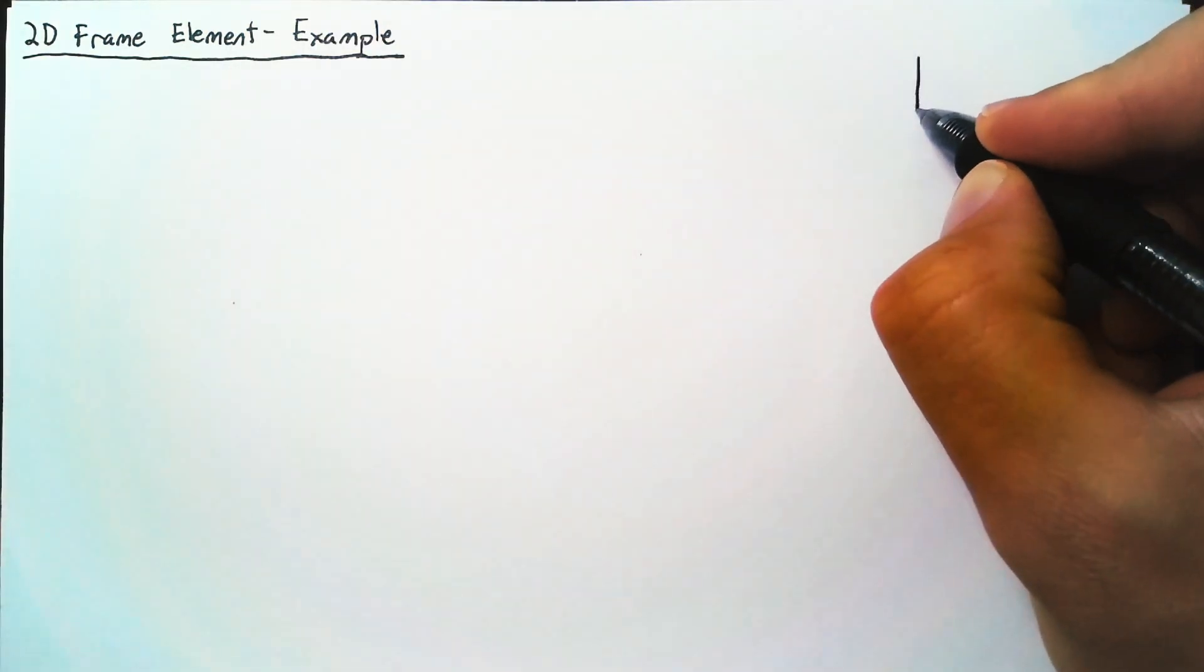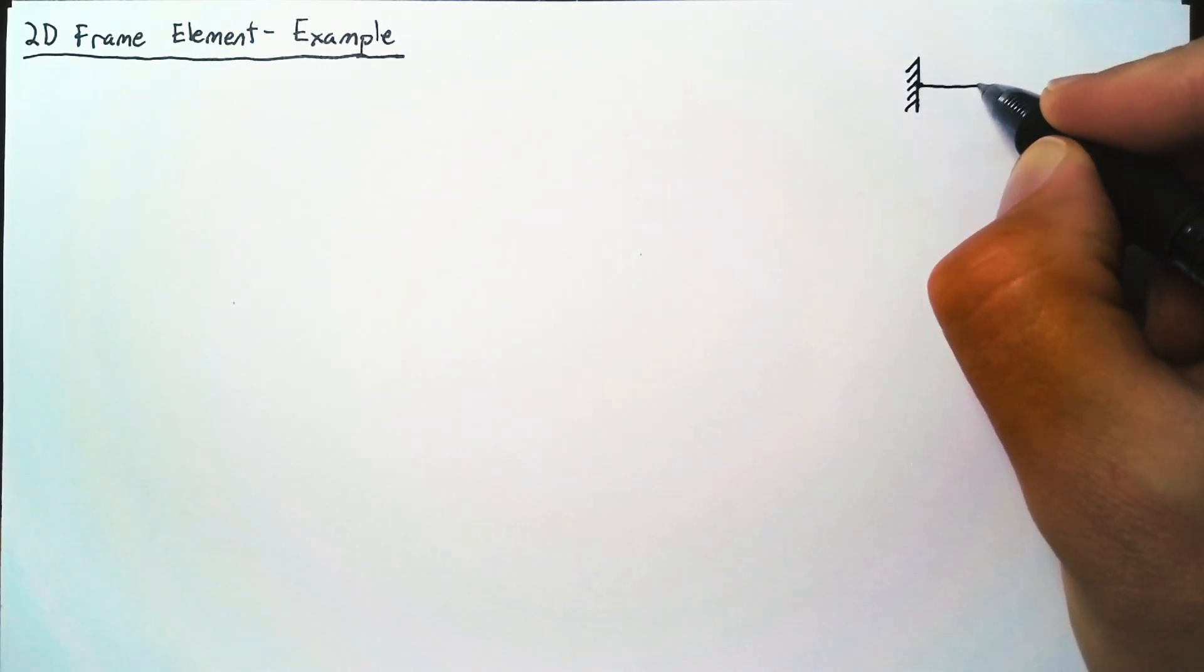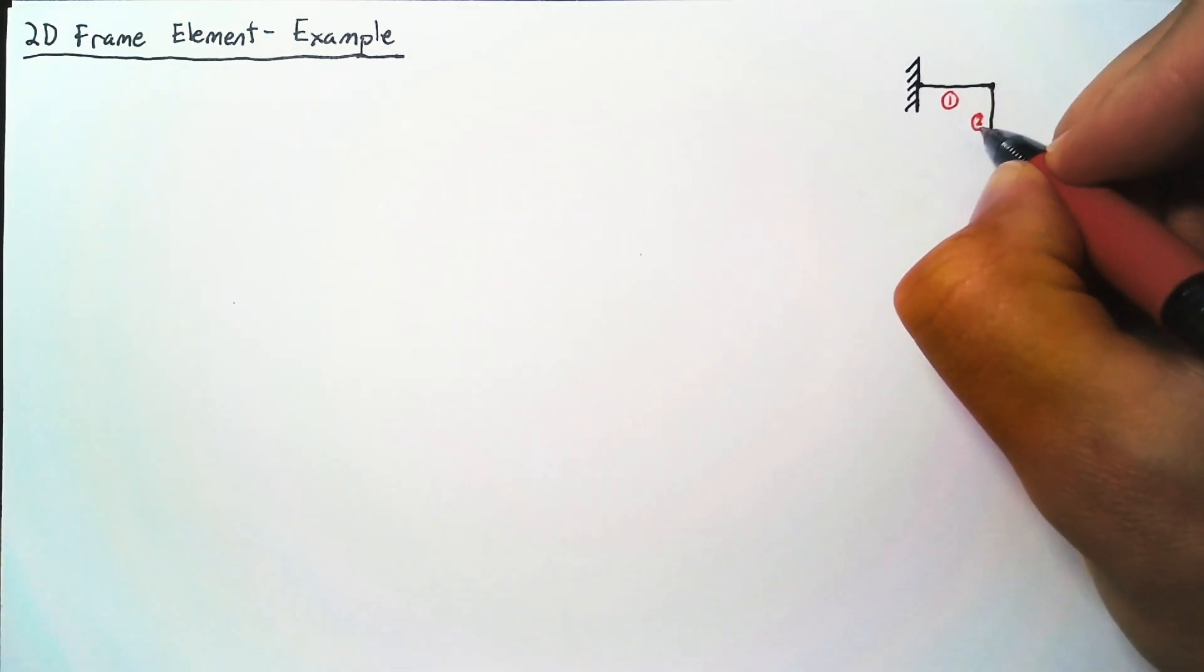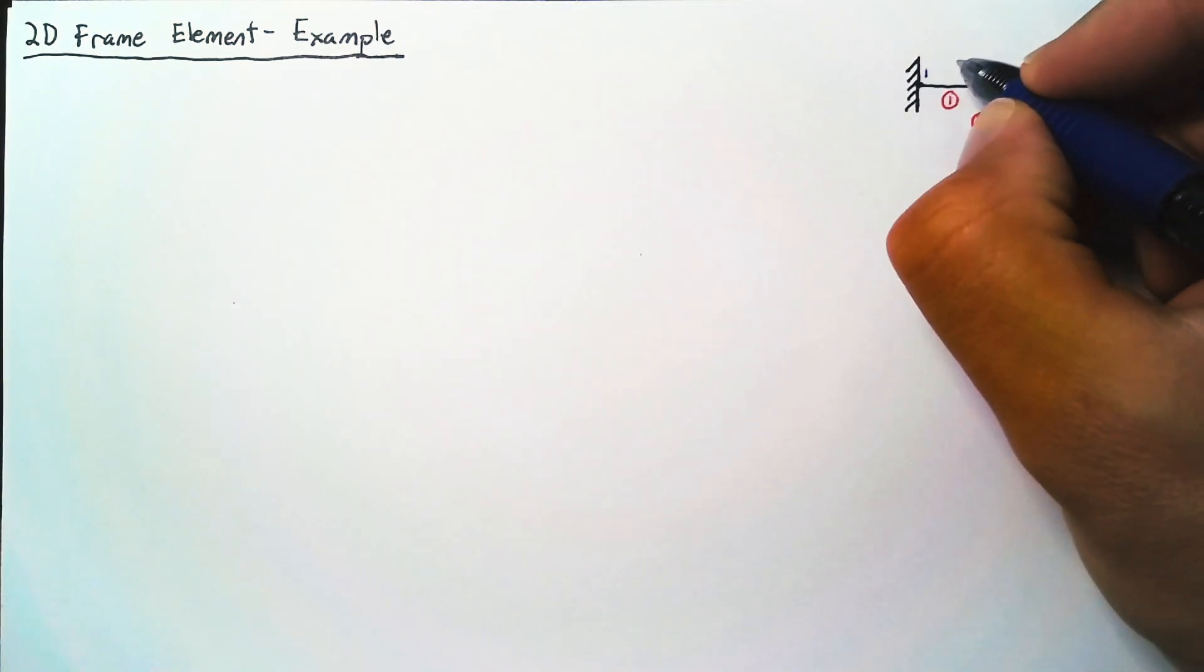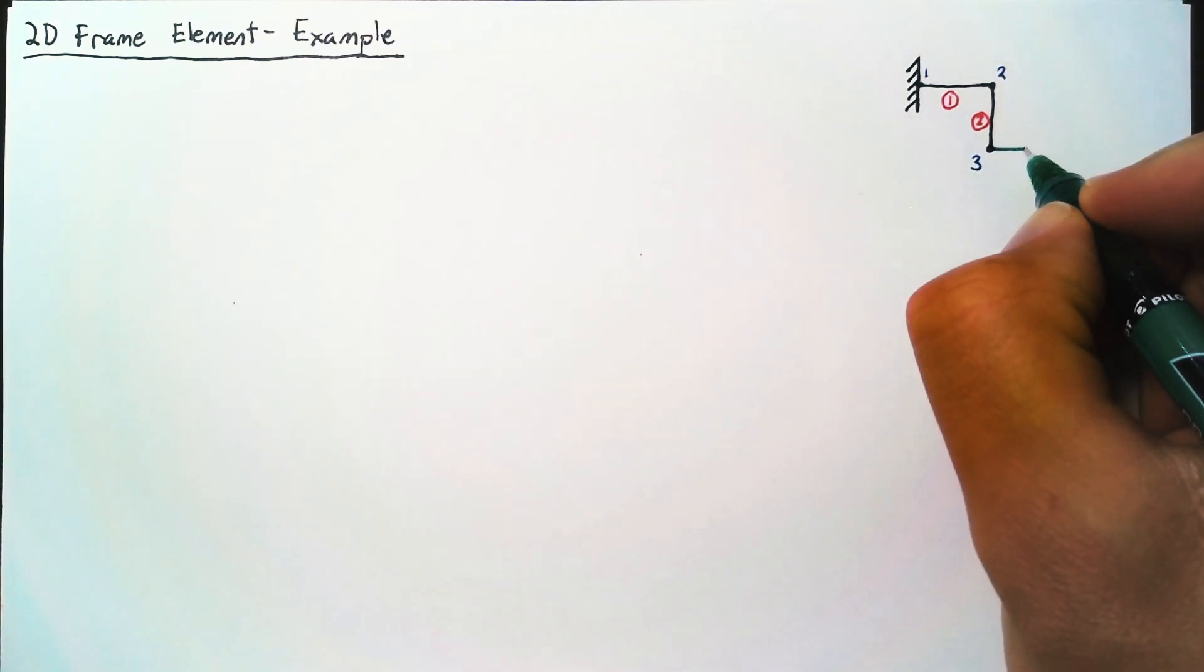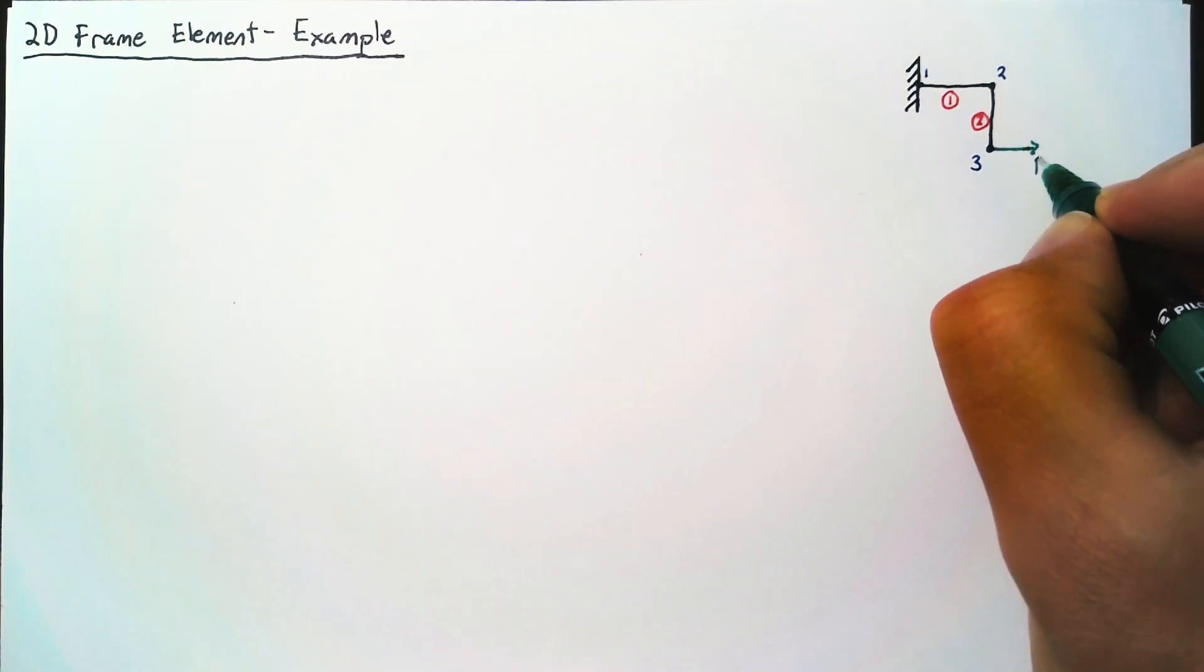As always, let's start out by drawing the example problem. We're going to be looking at a frame with two elements and three nodes, and we will have a force on this third node off to the right.